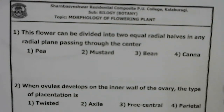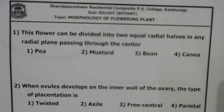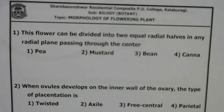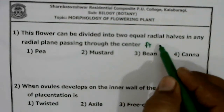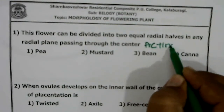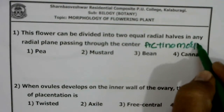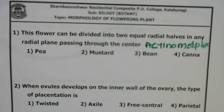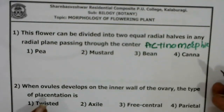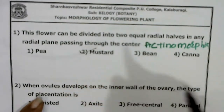Good afternoon, dear students. Today we will discuss the morphology of flowering plants, Part 2 question paper. The first question is: in this flower, can it be divided into two equal radial halves in any radial plane passing through the center? This means it is actinomorphic. Actinomorphic means we can divide the flower into two equal halves in any plane, so the correct answer is mustard.